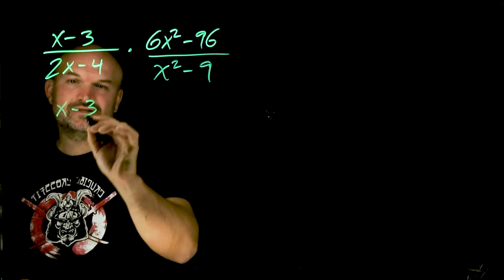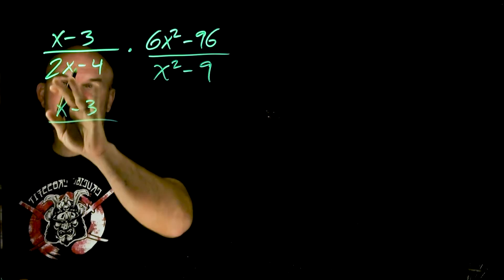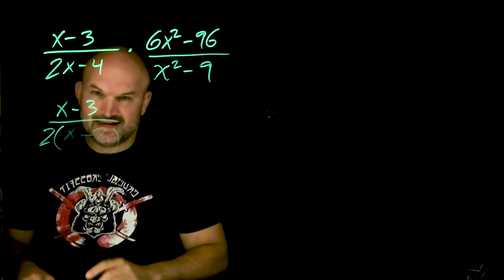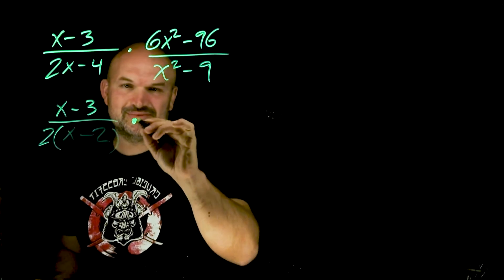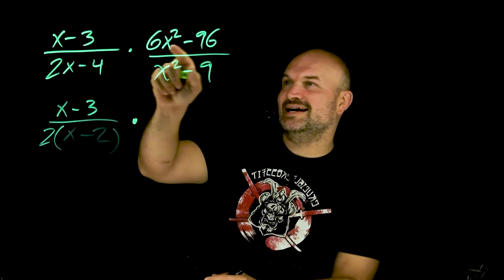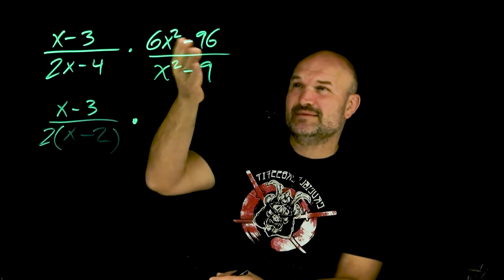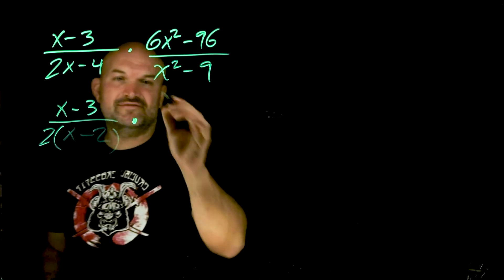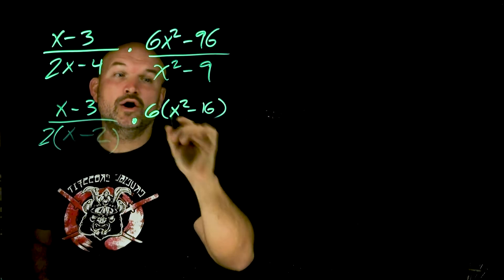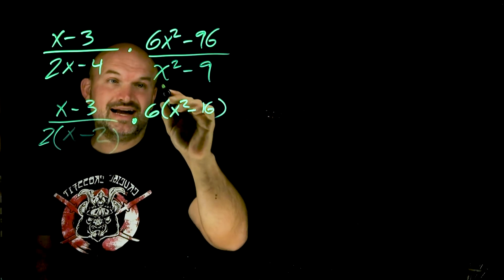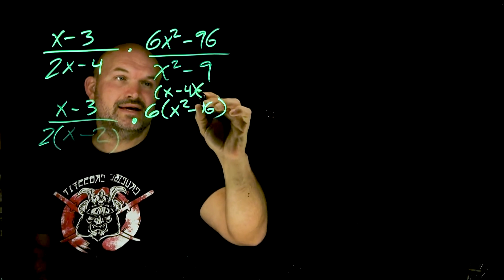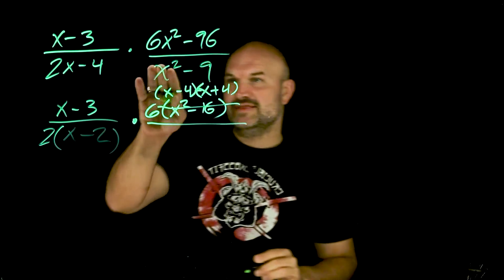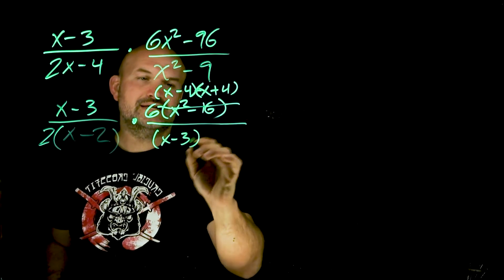The first expression I'll leave as is. In the next one, 2x and 4 share a common factor of 2, so I factor that out to get 2x times (x minus 2). Over here, 6 goes into 60 ten times and 6 goes into 36 six times, so I factor out a 6, leaving x squared minus 16, which is a difference of two squares: (x minus 4)(x plus 4). Then over here I have (x squared minus 3) times (x squared plus 3).